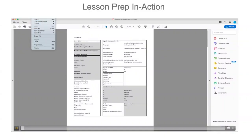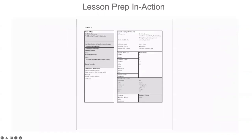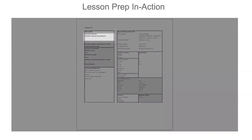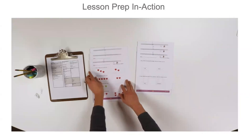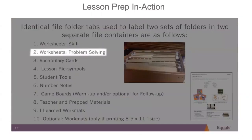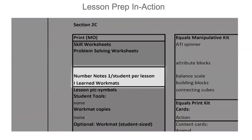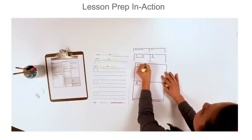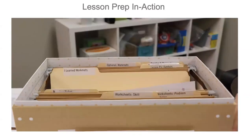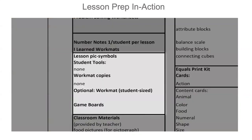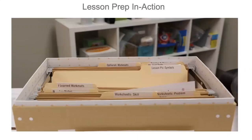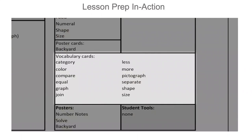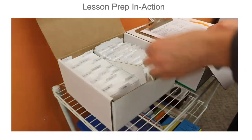Pulling it all together — let's take a look at this process in action. Begin by printing the material list by section for the current section you plan to teach. Once your materials list by section is printed, begin with the top gray boxes on the left and print the skill and problem-solving worksheets for the entire section. Separate them and file them in their corresponding file folders. Next, print the number notes and I-learned workmats. Consider labeling this set as a master and use it to make copies as you teach the curriculum — you'll need one per lesson. Place those in the corresponding labeled file folder. The final resources to print are the lesson-picked symbols, workmat copies, and optional workmats. Once printed, organize each resource into its own labeled file folder. Then use the list to locate the needed vocabulary cards and file them in the vocabulary card folder.